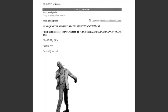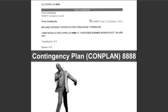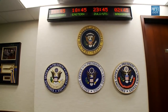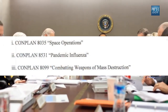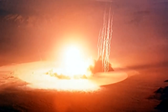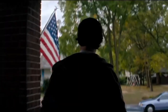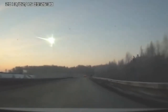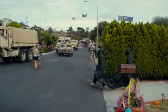In this video, I explain the US military's contingency plan CONPLAN 8888. The United States government has many contingency plans for different scenarios, ranging from a nuclear war, an invasion of the US mainland, large-scale disasters, to a zombie apocalypse.